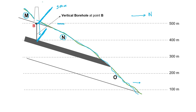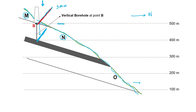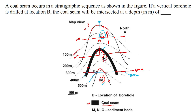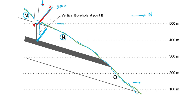In the map view — the map view is the top view of the topography — in the map these two lines will just be coinciding, just like on this map as you can see here. But actually the 500 meter stratum contour is at a height of 500 meters and the 400 meter stratum contour is at a height of 400 meters. So if you construct a vertical borehole at a point with a surface elevation of 500 meters, the coal seam is located at 400 meters.